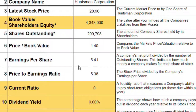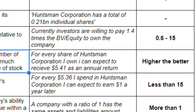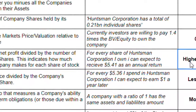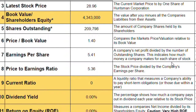Item number seven is earnings per share — the company's net profit divided by the number of shares outstanding, indicating how much money a company makes for each share of stock. For every share of Huntsman I own, I can expect to receive $5.41 as an annual return. The guidance from the book is that the higher the number, the better. This doesn't necessarily mean you'd receive the full $5.41, as some companies may invest their earnings or use it to pay debts.